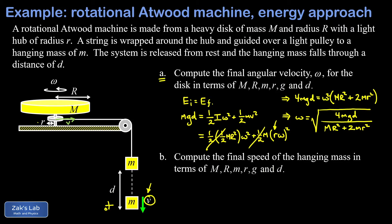We end up with this big expression for the final angular velocity of the disk: that's four little mgd divided by big M big R squared (those are the dimensions of the disk) plus two little m little r squared, where little m is the mass of the hanging mass and little r is the radius of the hub that the string was wrapped around, and then we square root that entire fraction.